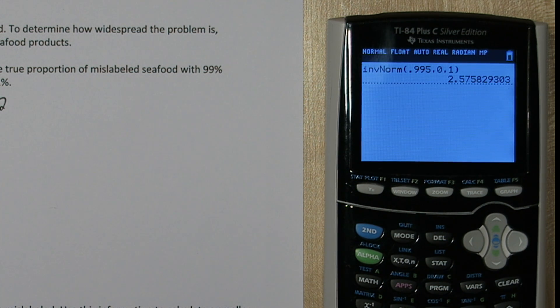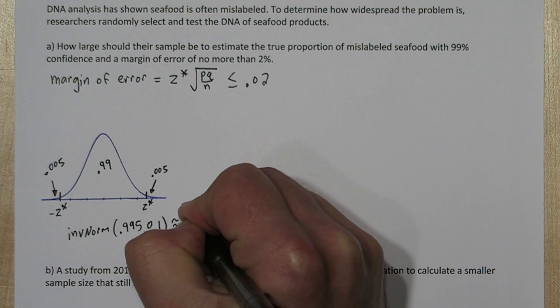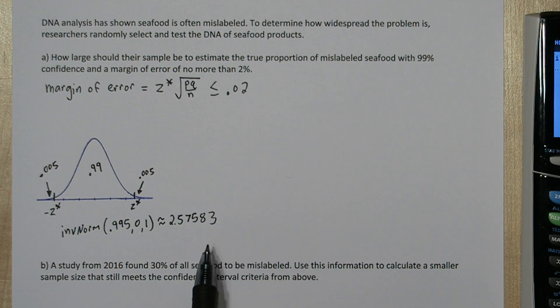When we press enter, we get our critical value. So let's fill that in. I'm not going to do much rounding here because rounding can make a pretty big difference in these sample size calculations.